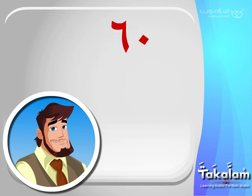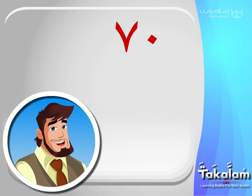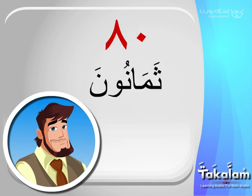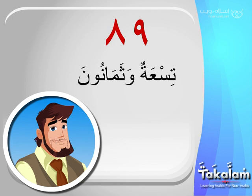60 is ستون, and 64 would be أربعة وستون. 70 is سبعون, and 77 would be سبعة وسبعون. 80 is ثمانون, and 89 would be تسعة وثمانون.